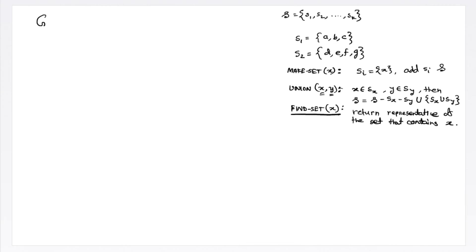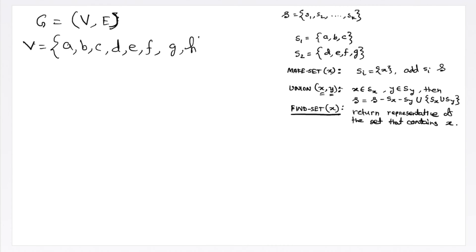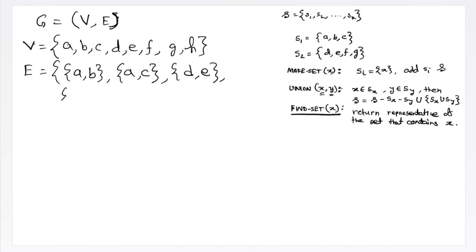A graph is generally represented by G which contains two types of elements: a set of vertices and a set of edges. Let's say we have a vertex set V equals {a, b, c, d, e, f, g, h} and a set of edges: edge a-b, edge a-c, edge d-e, edge a-d, edge a-f, and edge g-h.